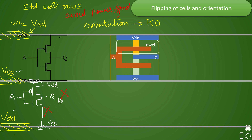All cells placed in an R0-oriented row will have no power-ground shot. If we want to use another row, we skip one row and place cells in the next. However, every alternate row ends up empty because we cannot create power-ground shots. This means almost half the design will have empty rows, making utilization of the core area inefficient. That is why we have the concept of flipping of standard cells.